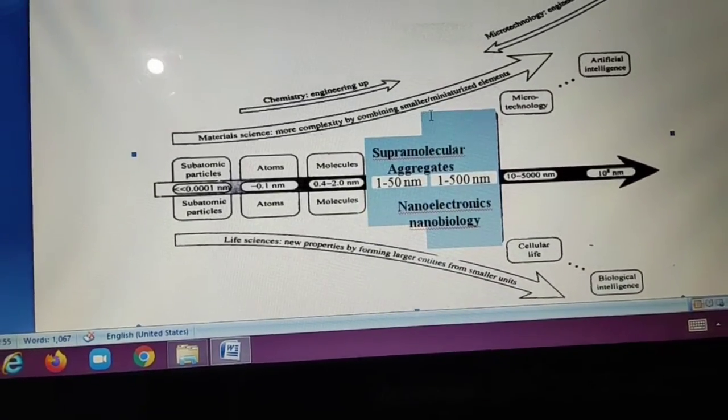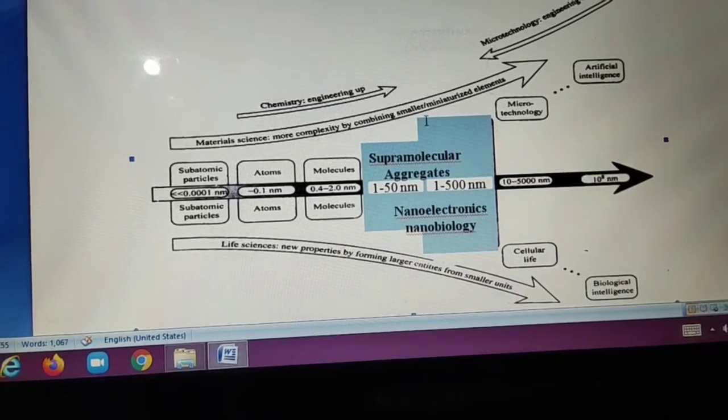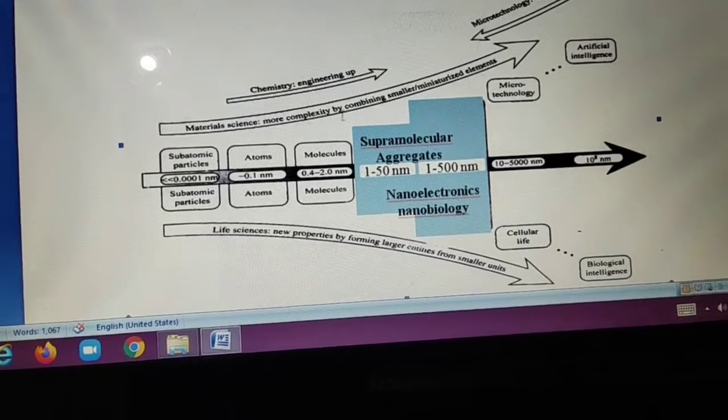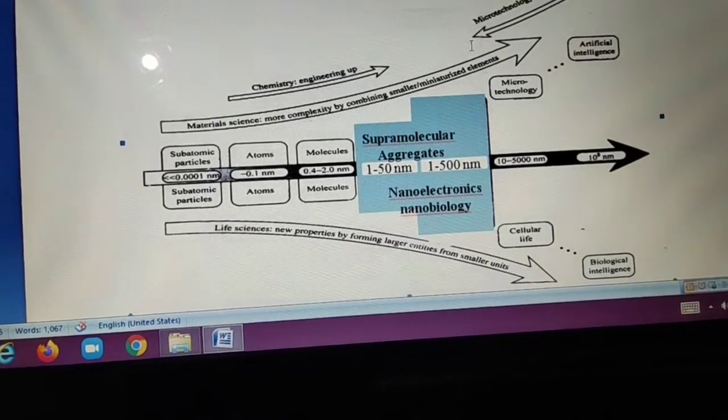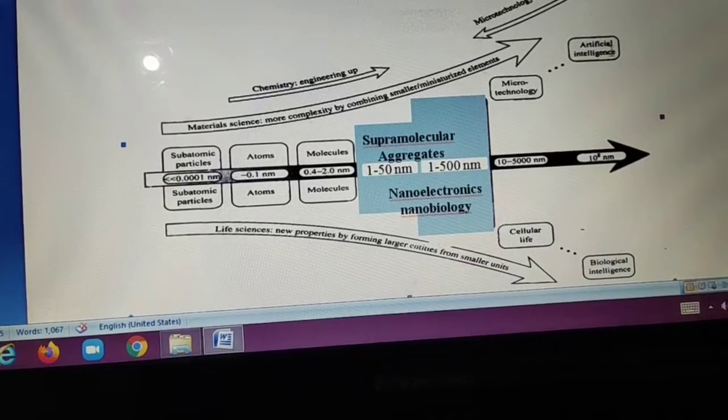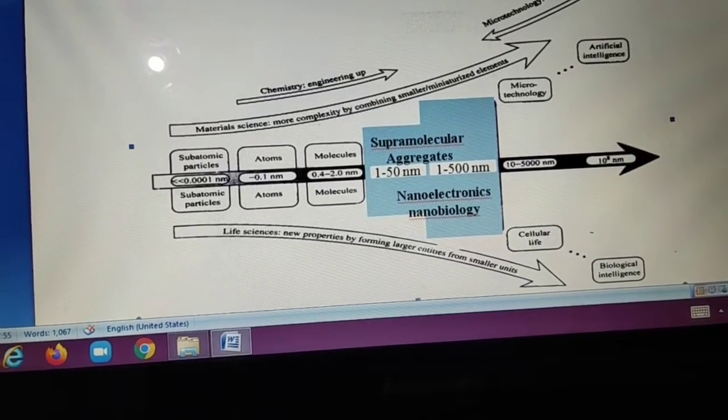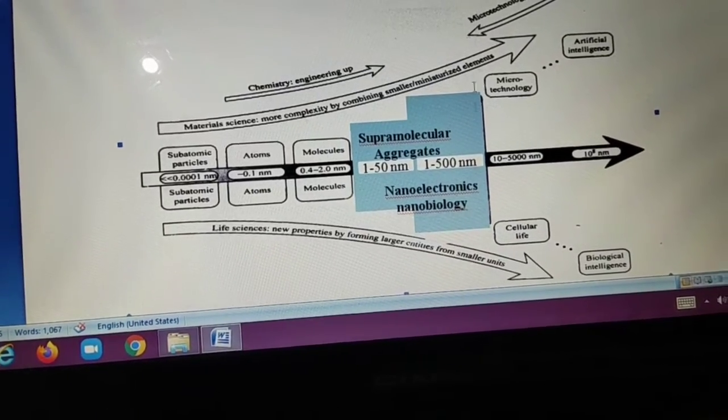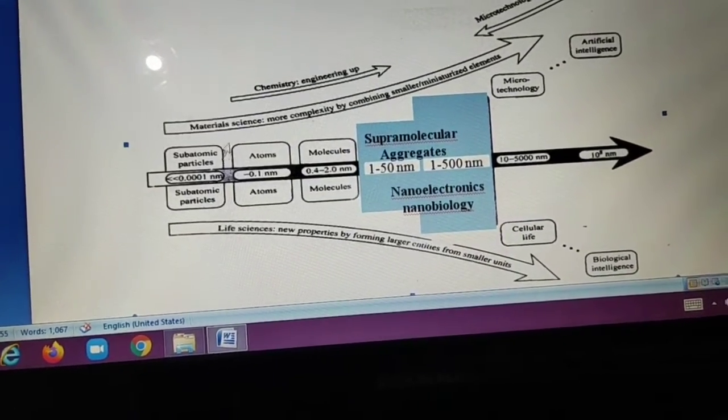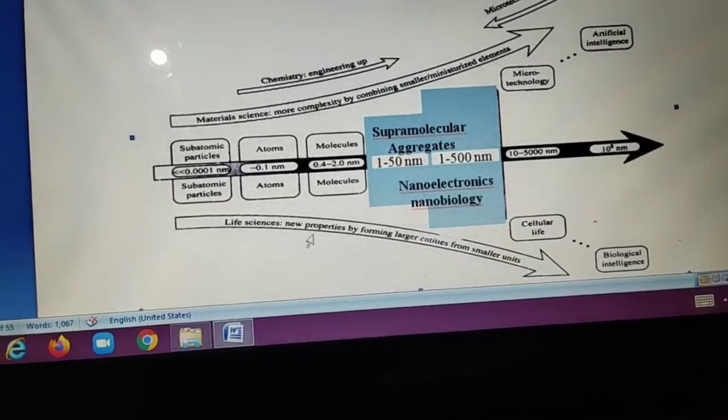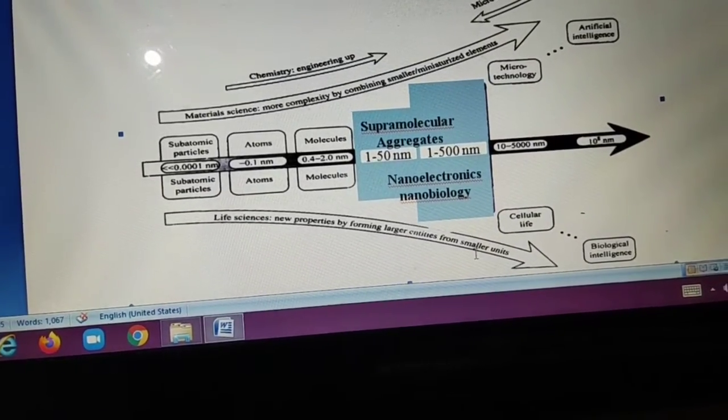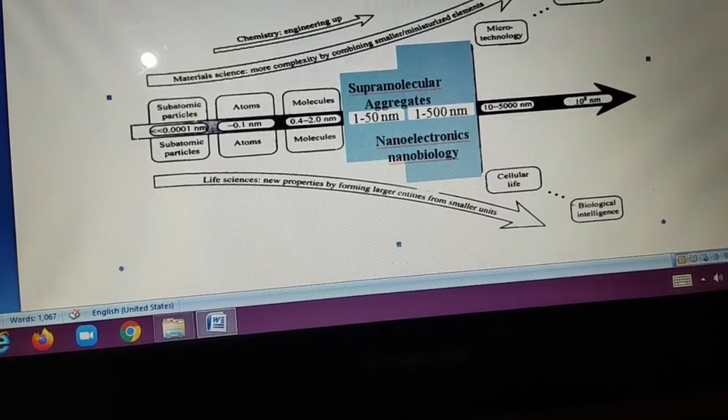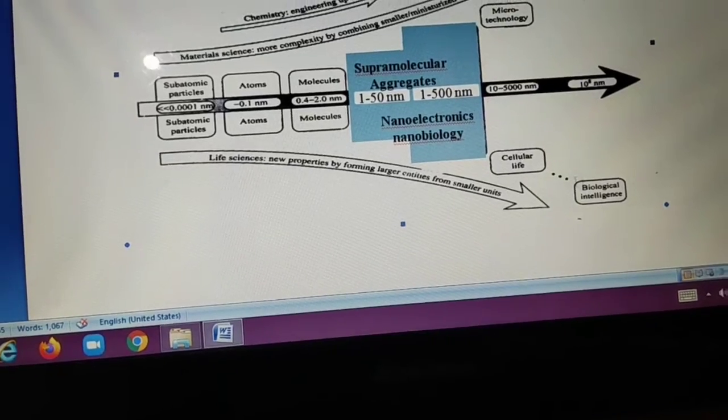More complexity by the combining. Smaller miniaturized elements. Chemistry engineering up. And this is the microtechnology. Artificial intelligence. Engineering down. This is engineering up. And this is the engineering down. Life science. This is material science. This is life science. New properties of the forming larger entities from the smaller unit. Biological intelligence and cellular life.